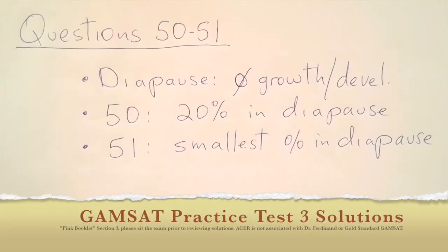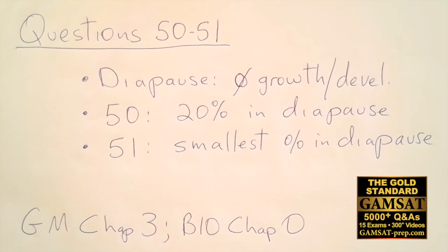Questions 50 and 51. So we learned something new about diapause. We learned that diapause means that there is no growth or development. And then we have the graph and the first question, 80% of the fly population.